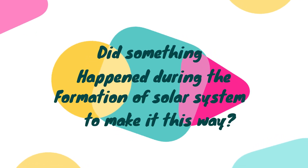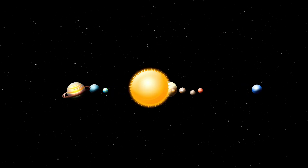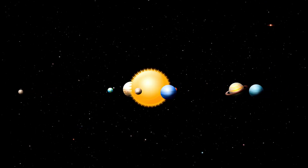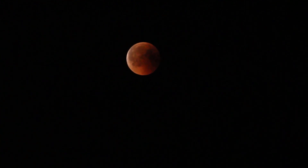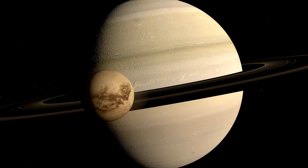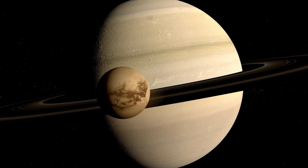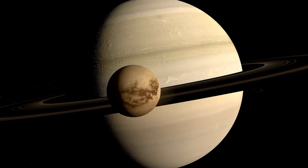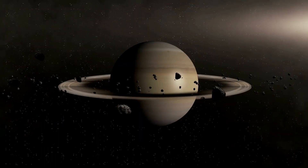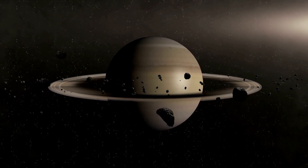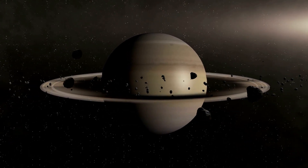Did something happen during the formation of the solar system to make it this way? From our recent space ventures, we found out it is not a massive coincidence, because not only do planets orbit the sun in the same direction, but regular moons orbit their planet on the same plane and in the same direction too. In the case of Earth, we only have one moon, but our gas giants have numerous moons and all of them orbit the planet in the same plane and direction. The beautiful Saturn's rings orbit Saturn along the same plane as its regular moons.